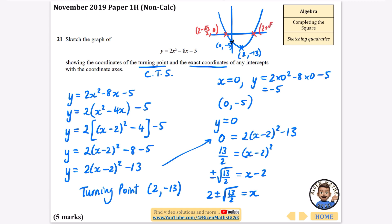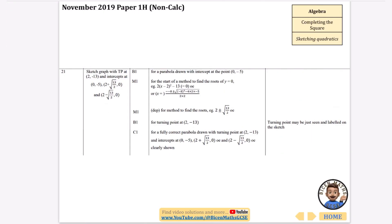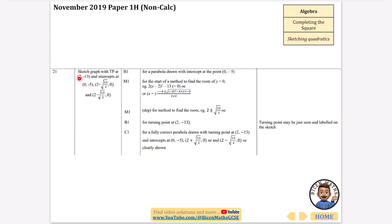That was quite difficult but it was worth 5 marks. To summarise: we found the turning point from the completed square form, found the y-intercept by setting x equals 0, and the x-intercepts by setting y equals 0. The intercepts are at (0, minus 5), (2 plus root 13 over 2, 0), and (2 minus root 13 over 2, 0).